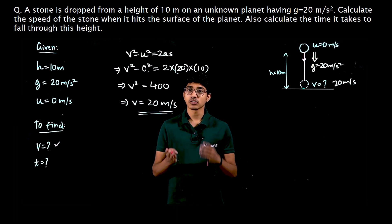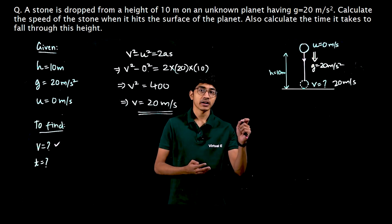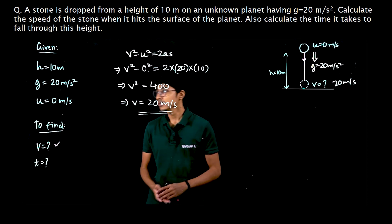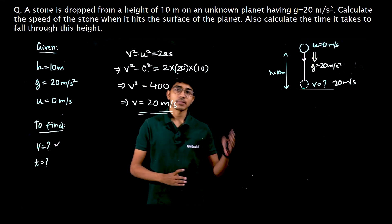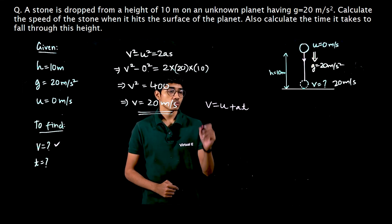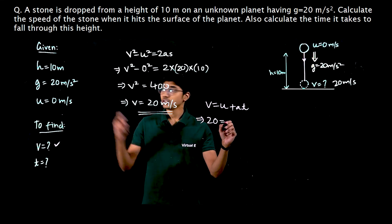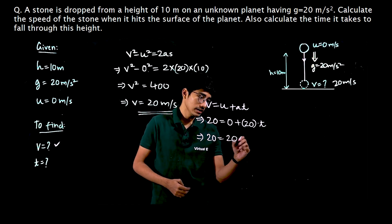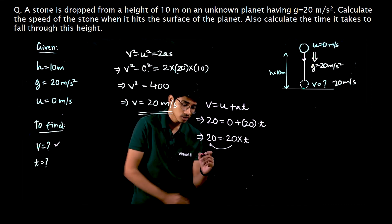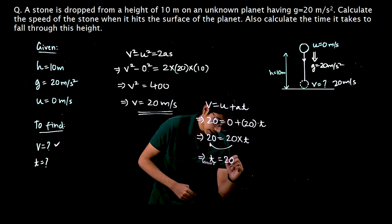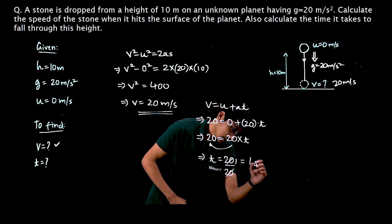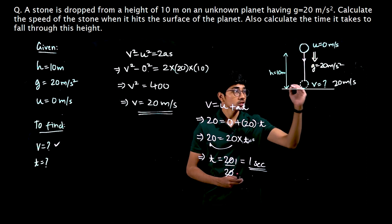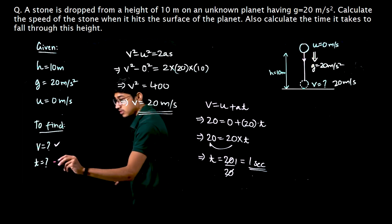Now we have to find the time it takes to fall. We can use the first equation of motion as it is the easiest one: v equals u plus at. We have u which is 0, we now know v which is 20 meter per second, and we have a which is 20 meter per second square. So 20 equals 0 plus 20 multiplied by t. Dividing both sides by 20, t equals 1. Therefore the time comes as 1 second. Is planet pe ball ko 10 meters ki height se drop karo to 1 second mein surface pe aa jaati hai.